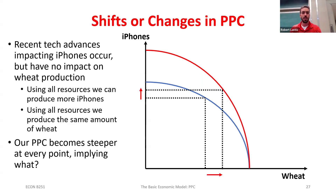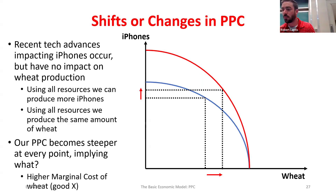If a technology change only impacts one good, you don't get a nice parallel shift out. Instead, just one of the intercept values changes. Notice what's happening to the slope: at every single quantity of wheat, the curve becomes a little bit flatter than before. The steeper the slope, the higher the cost — so whenever we have technology that impacts only one good, it makes producing the other good now more costly.